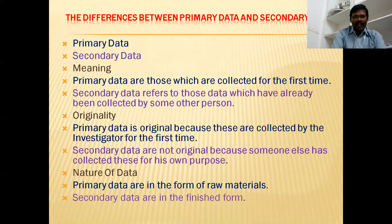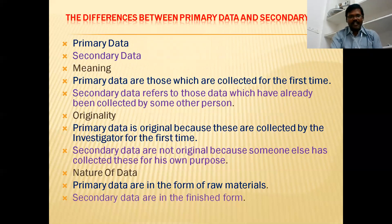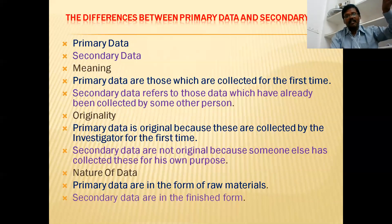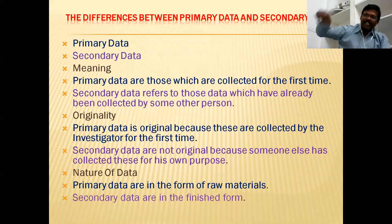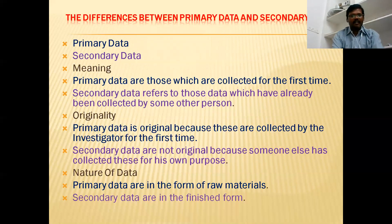We will try to understand the difference between primary data and secondary data. Secondary data refers to those data which have already been collected by some other person. That data was already collected — we are going to take it. But primary data means no one has collected it till now — for the first time we are collecting from the people. That will come under what is called primary data. So data collected by the investigator, observing the data and taking information from the respondents — whatever data is collected by the investigator through primary sources — will be more reliable.